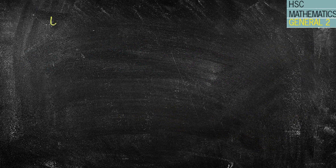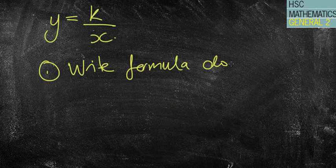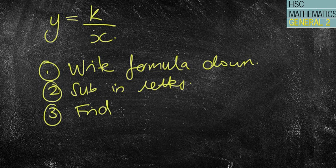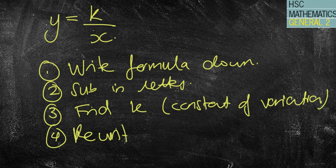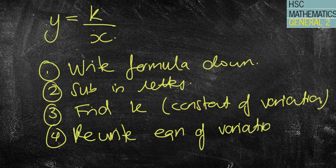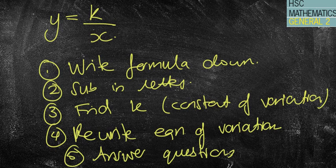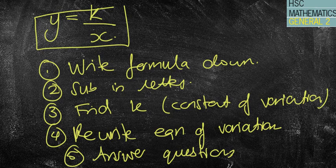Alrighty folks, the formula for inverse variation is k over x. Remember the five steps: Number one, write the formula down. Number two, sub in the letters. Number three, find k, your constant of variation. Number four, rewrite the equation of variation with the k value in. And finally, number five, answer the questions given. It's exactly the same as direct variation, just using y equals k over x. Make sure if it's a squared you put a squared in. Have a great day, guys, and let me know if you need any more assistance with inverse variation.